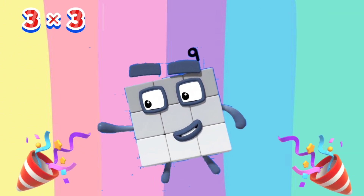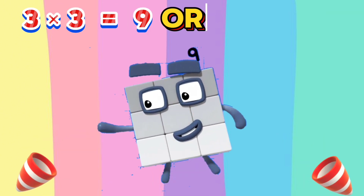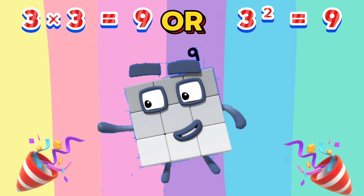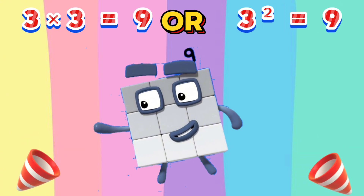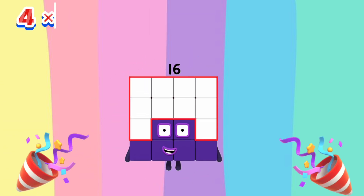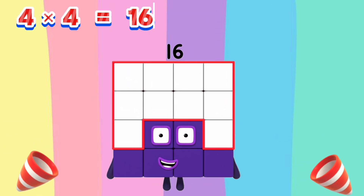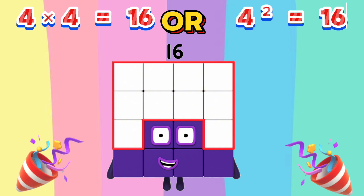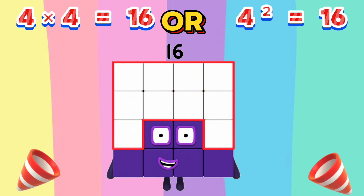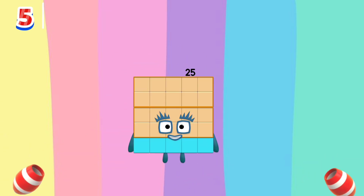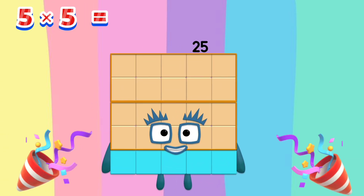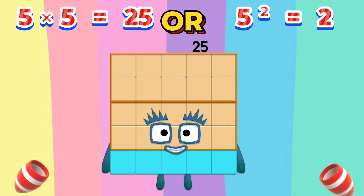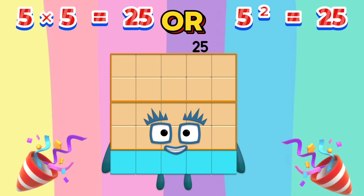Three times three equals nine, or three squared equals nine. Four times four equals sixteen, or four squared equals sixteen. Five times five equals twenty-five, or five squared equals twenty-five.